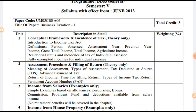As per the Income Tax Act, while defining 'assessee' we have seen that according to law, an assessee is a person by whom any tax is payable. Hence the meaning of the term 'person' requires clarification. Section 2(31) of the Act has given an inclusive definition of a person as follows. Person includes: 1. An individual, i.e. a natural person, i.e. a human being. 2. A Hindu Undivided Family (HUF). 3. A company. 4. A firm. 5. An association of persons or a body of individuals, whether incorporated or not.